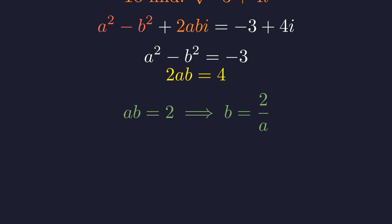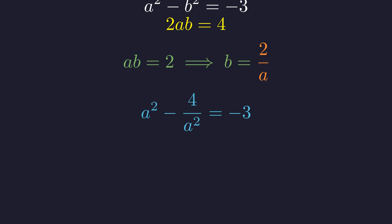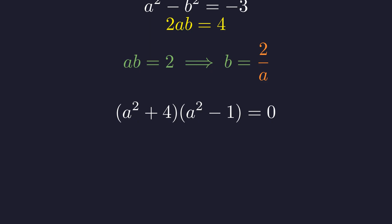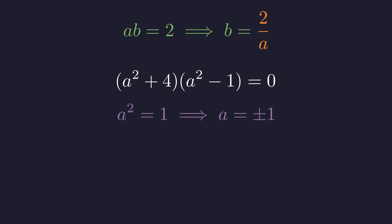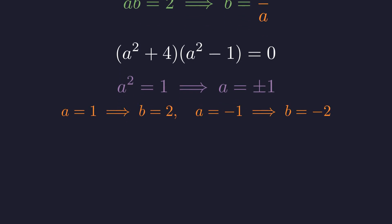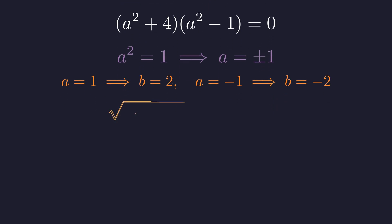So b equals 2 divided by a. Substituting into the first equation gives a squared minus 4 over a squared equals negative 3. Multiplying by a squared: a to the 4th plus 3a squared minus 4 equals 0. This factors as the quantity a squared plus 4 times the quantity a squared minus 1 equals 0. Since a is real, a squared equals 1, so a equals plus or minus 1. If a equals 1, then b equals 2; if a equals negative 1, then b equals negative 2. Therefore, the square root of negative 3 plus 4i equals plus or minus the quantity 1 plus 2i.